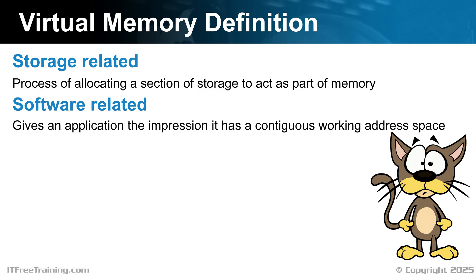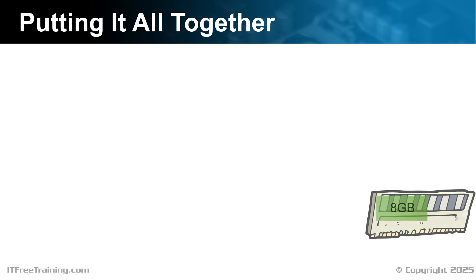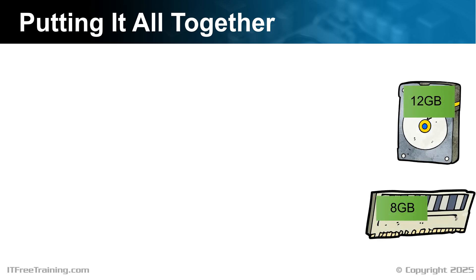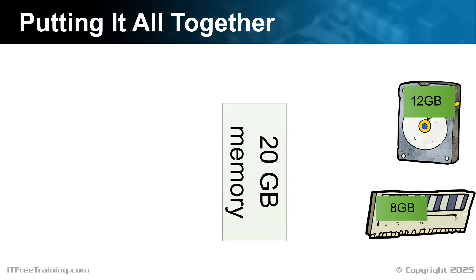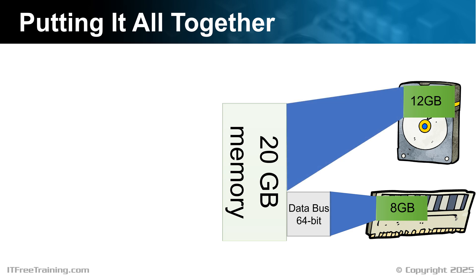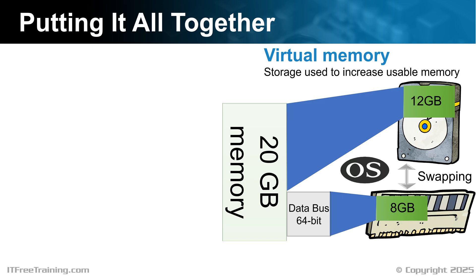Let's bring the main concepts of this video together. Consider a computer that has 8 gigabytes of real memory and also 12 gigabytes of virtual memory. The virtual memory may be a fixed size or dynamic, expanding as needed. The computer will see this as 20 gigabytes of usable memory. Physical memory is connected using a 64-bit bus, and if your computer has multiple channels with multiple memory modules, there may be multiple data buses, each 64 bits wide. The 12 gigabytes of virtual memory on the hard disk is seen as part of the usable memory. Since the computer can only access data in the memory modules directly, when a request comes for data stored on the hard disk, the operating system swaps the data on the hard disk with the memory module — this may also be referred to as paging. Virtual memory storage is storage used to increase usable memory.